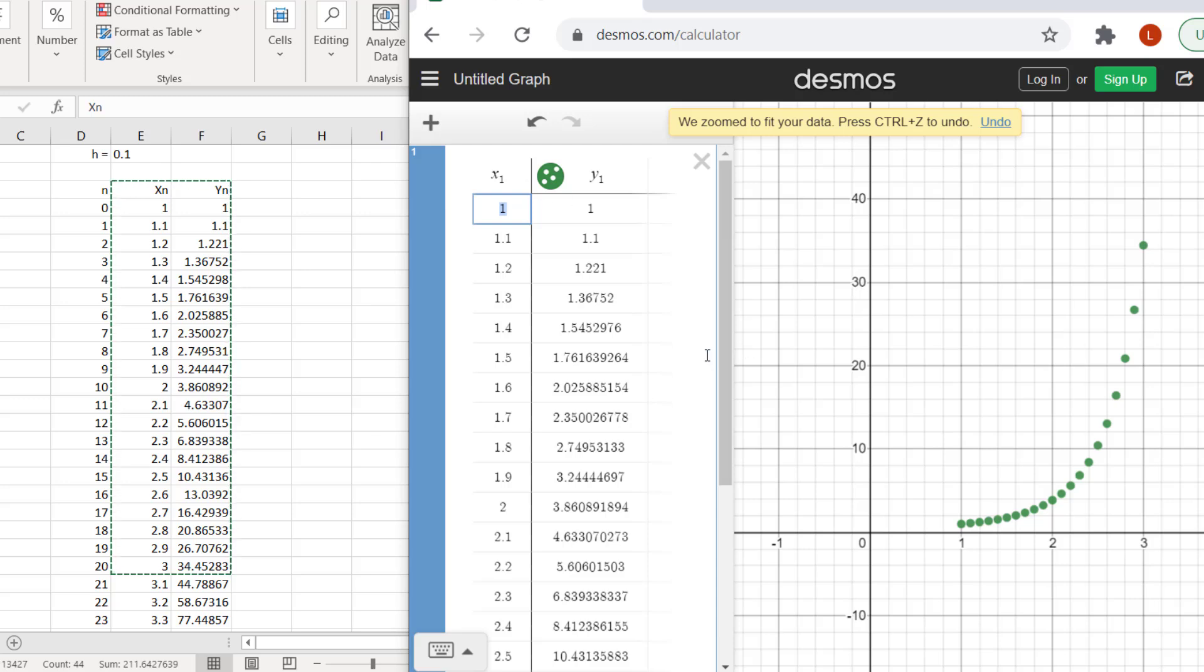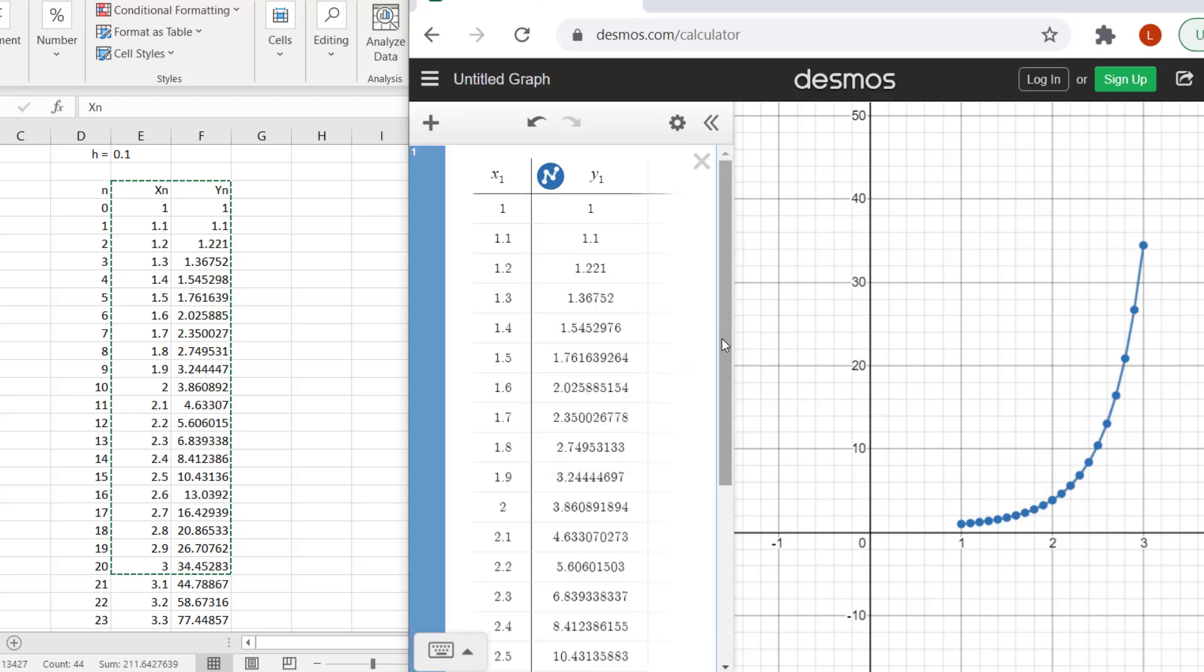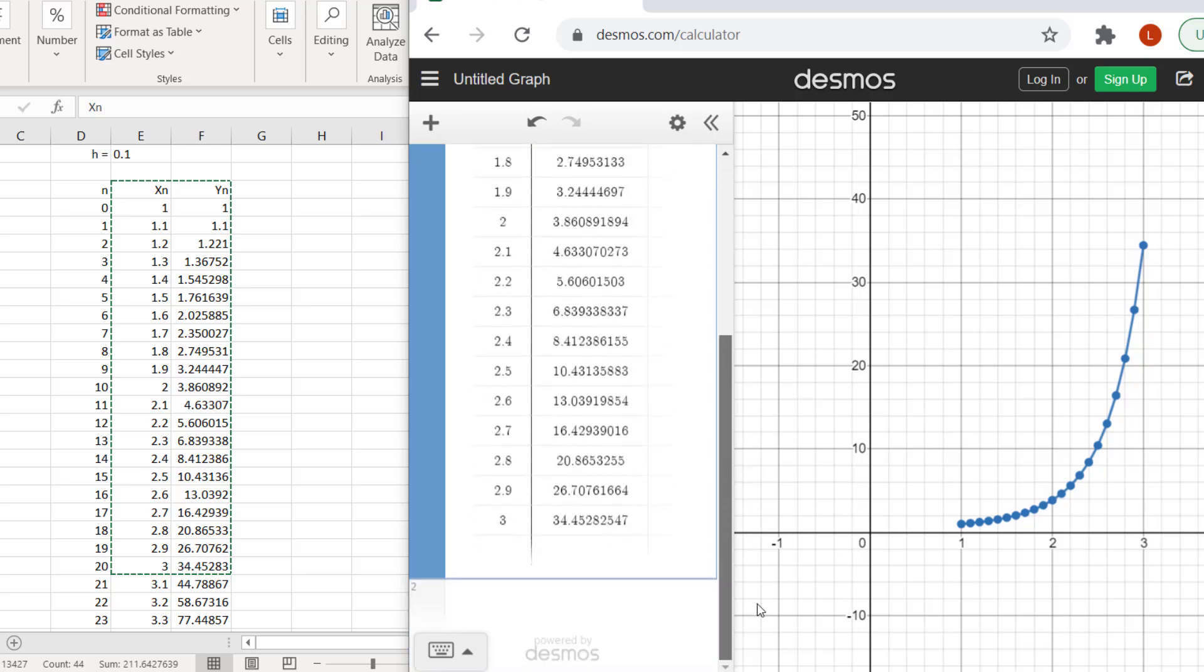Our data come into Desmos as a table, and are plotted as dots on the graph. If we left click and hold on this circle, we get a menu. We can select the color of our points. I like blue. We can make our color brighter or paler. The brightest possible setting is 1. We can connect the dots with line segments. These blue dots are the Euler's method approximation using h equals 0.1.